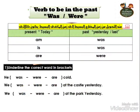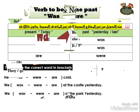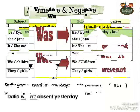طيب، نتعرف مع بعض على القاعدة. أول، احنا ندي الـ verb to be. احنا عارفينه عموما في الـ present بيكون من am, is, are. احنا عايزين نتكلم في الـ past، في الماضي، بيكون من was و were. زي ما احنا شايفين قدامنا: am الـ past بتاعتها was، is الـ past بتاعتها was، are الـ past بتاعتها were.